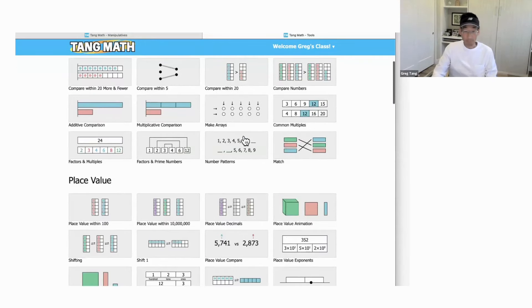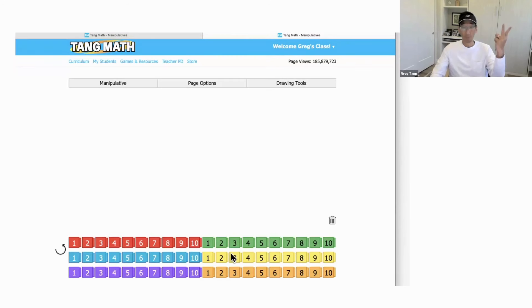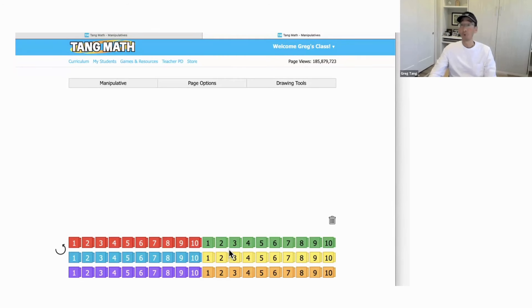Ready? I'm going to get out my manipulatives. During the pandemic, we built these. We made them free. Ready? Close your eyes for me. And when I say go, open your eyes and show me immediately with your fingers how many. Ready? Go. Show me with your fingers how many. Right away.